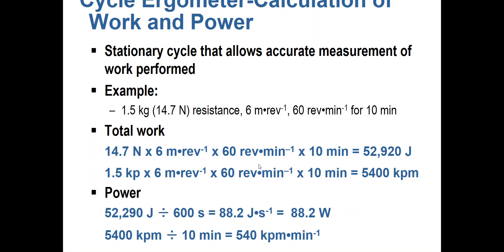To determine power from that work, we simply take the total work performed and divide it by time in seconds. A common mistake is thinking that because time was multiplied in the work calculation, power has also been calculated — but remember, power is always a quotient, not a product. In the work formula, the six meters times sixty revolutions per minute times ten minutes all denotes distance. To get power, you must then divide the total work by the total time, and that gives you the watt amount.